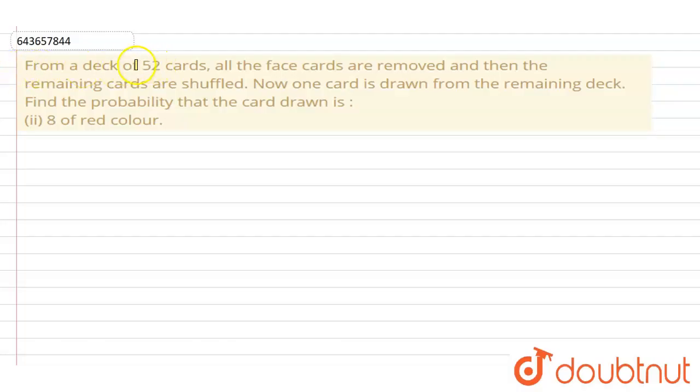From a deck of 52 cards, all the face cards are removed and the remaining cards are shuffled. Now one card is drawn from the remaining deck. Find the probability that the card drawn is 8 of red color. We need to find the probability that the drawn card is 8 of red color.